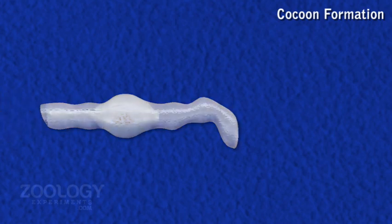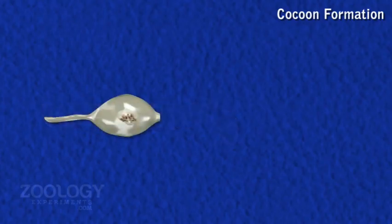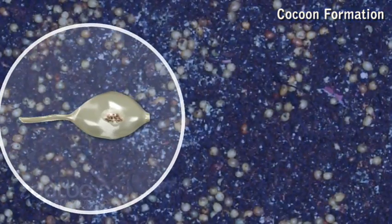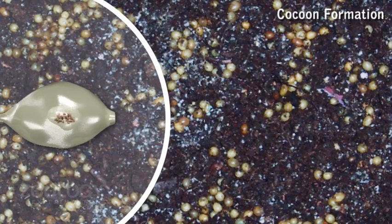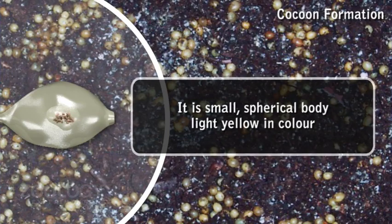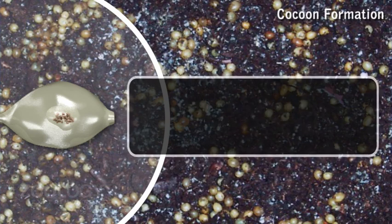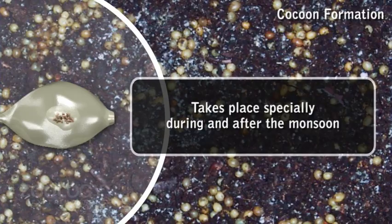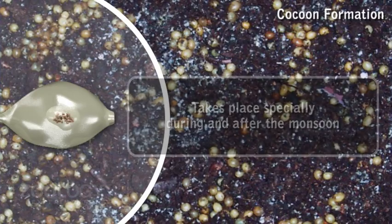Finally, when the cocoon is thrown off the head, its elastic ends close up and a yellowish rounded cocoon is formed. Fertilization occurs after the cocoon has been deposited in a moist place. The cocoon of Pheretima is a small spherical body, light yellow in color. Cocoon formation takes place in Pheretima after the monsoon.